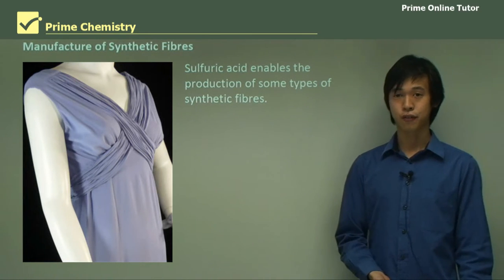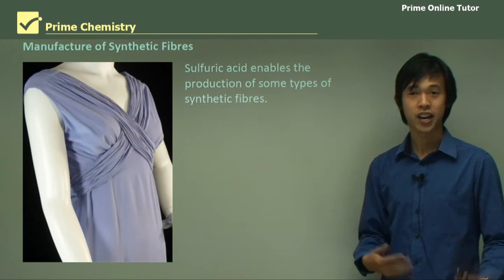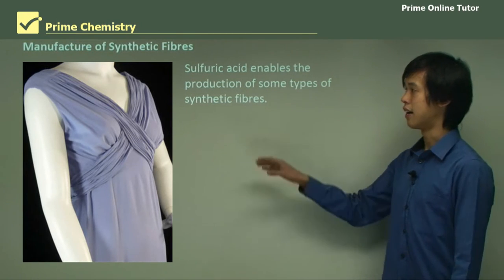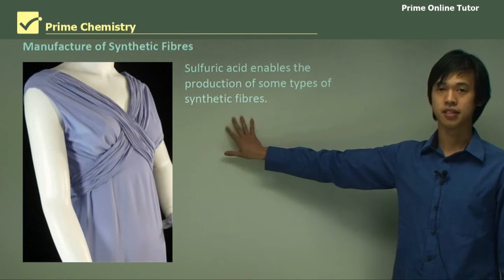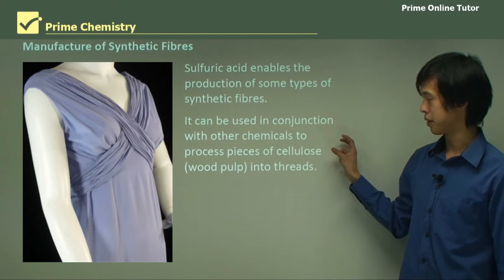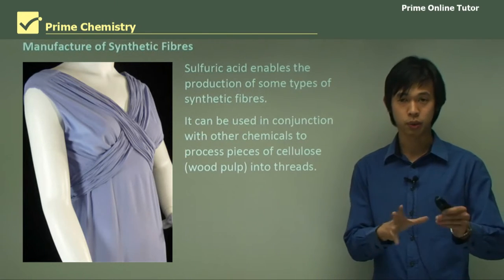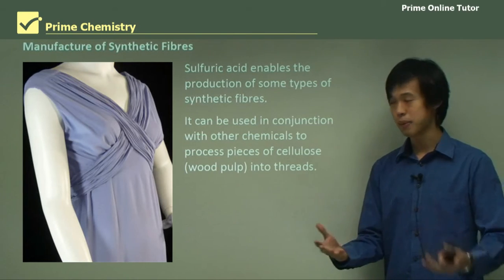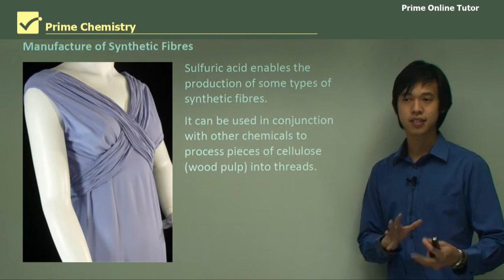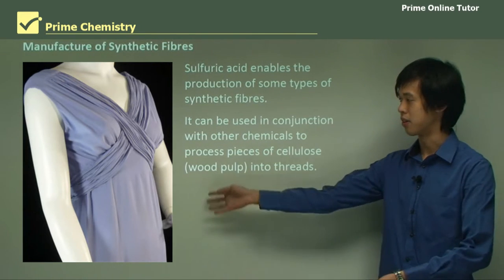We also use sulfuric acid to manufacture synthetic fibers. Things like rayon and nylon can be produced with the assistance of sulfuric acid. It can be used in conjunction with other chemicals to process cellulose — the woody part of biomass — into thread, which can obviously be woven into clothing.